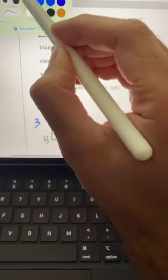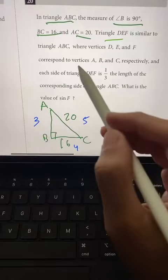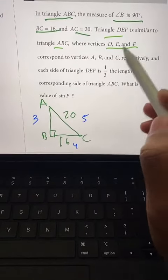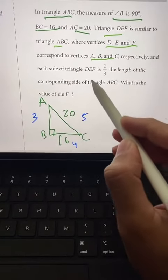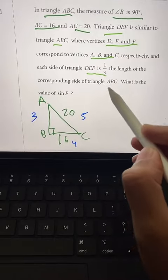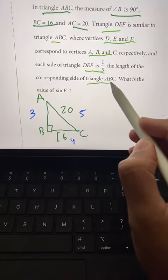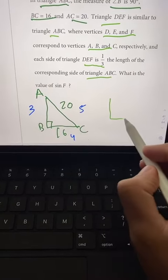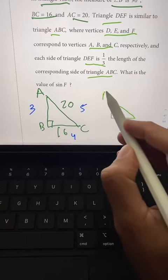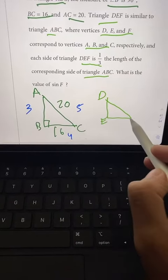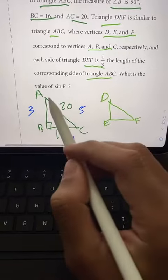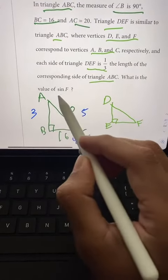Now we've got triangle DEF. DEF is similar to triangle ABC, where vertices D, E, and F correspond to vertices A, B, and C respectively, and each side of triangle DEF is a third the length of the corresponding side of triangle ABC. So we've got a smaller proportional right triangle, which we call a similar triangle, and we'll draw that little right angle there.